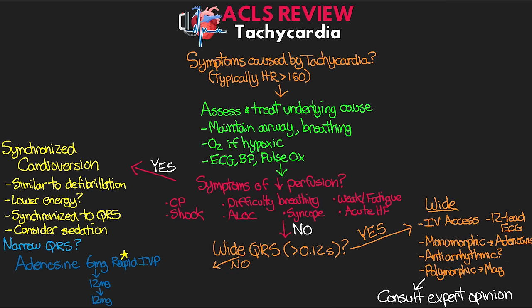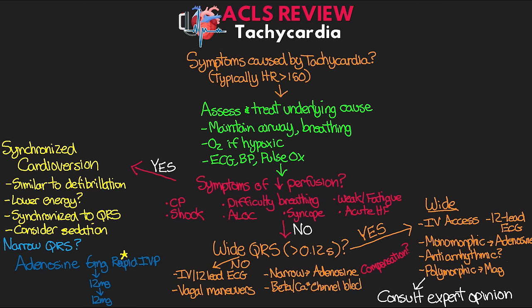If their QRS is narrow, we again want to ensure IV access and get a 12-lead ECG. In these cases, we can consider having the patient try vagal maneuvers — things like asking them to bear down like they're having a bowel movement, blow hard through a small straw, or if you are properly trained, perform external carotid massage. If they have a regular and narrow rhythm, we can consider the use of adenosine. Keep in mind that sinus tachycardia is often a normal physiological compensation response for something else going on with the patient, such as fever, hypovolemia, or shock. For the narrow QRS, beta blockers and calcium channel blockers may also be helpful, and we want to consider expert consultation with a cardiologist.